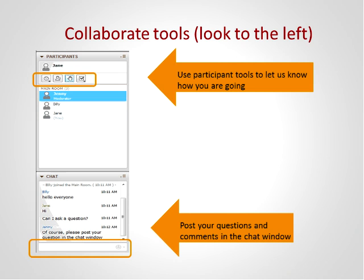Just running through the collaborate tools. Under your name you'll see four icons: a smiley face, an away signal, a hand up, and a tick. If you can hear me, just give me a tick so I can make sure everyone can hear me. Great, some ticks coming through. Perfect.